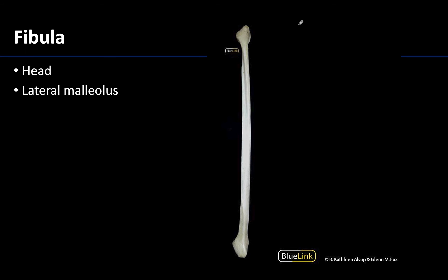The lateral and much thinner counterpart in the leg is the fibula. On an isolated fibula it can be difficult to tell which end is superior and which is inferior. The head of the fibula is the superior portion and is less tapered, slightly more bulbous, whereas the lateral malleolus on the distal end is more tapered. If you palpate the lateral side of your ankle area you are touching the lateral malleolus.